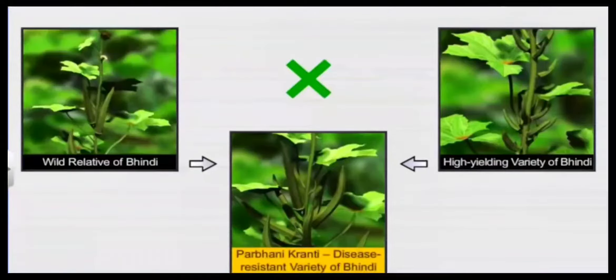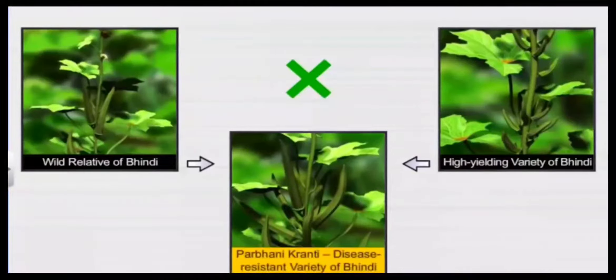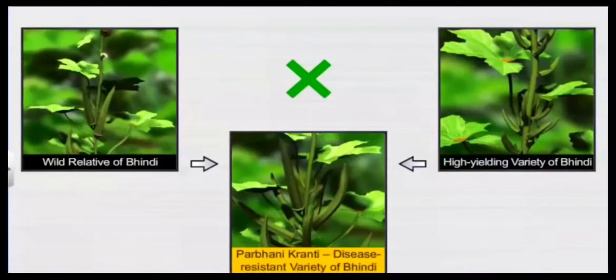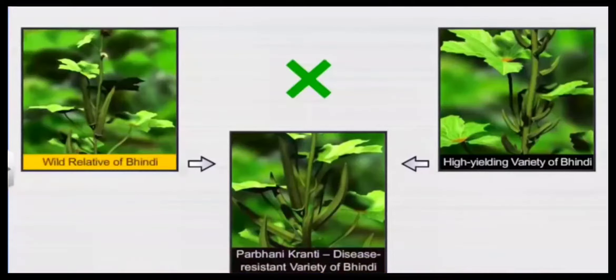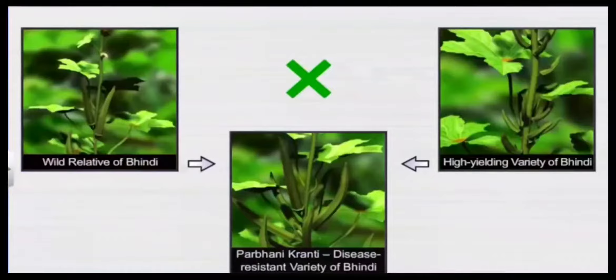Parbhani Kranti is resistant to yellow mosaic virus, and that resistance has come from a wild relative of its high yielding variety.